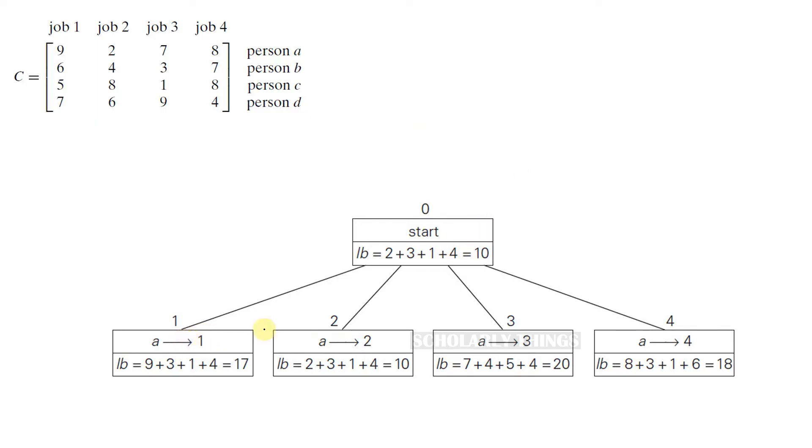Note that the numbers assigned to persons A, B, C, D are the job numbers, not the value of costs. Now branch out from node 0 to see all the possible selections and find their lower bounds. At this stage you are making the job choice for person A. If you assign job 1 to person A, the lower bound value will be 9 plus 3 plus 1 plus 4, which is 17.